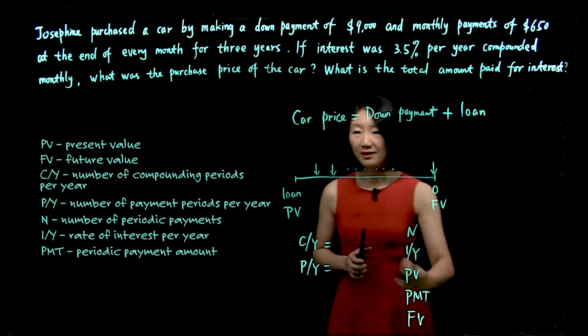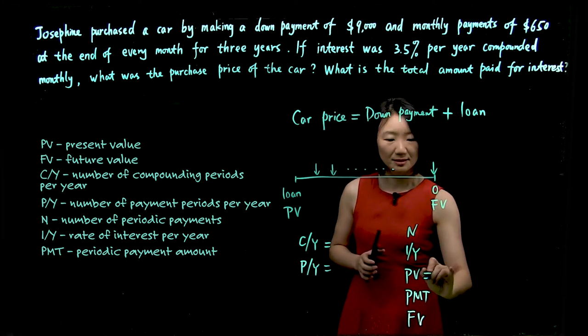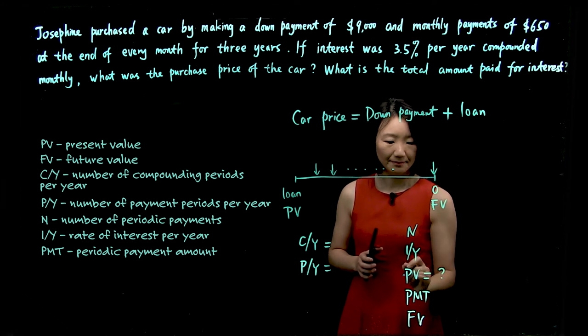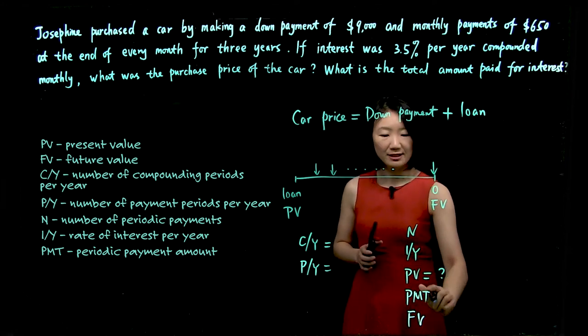So PV, we identify PV as unknown, that's the loan amount we're looking for. And the future value will be zero.